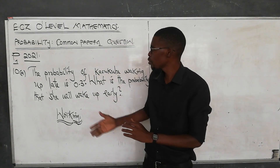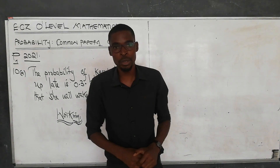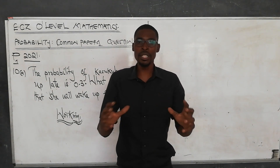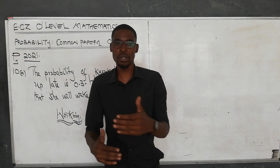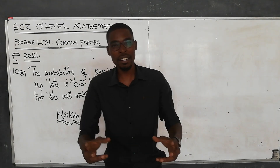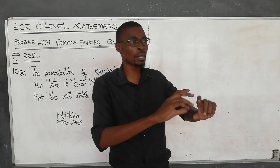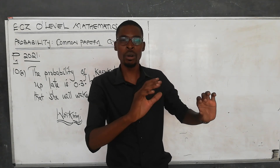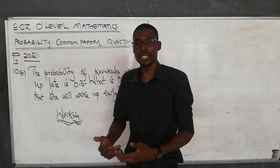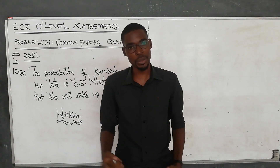Just to explain what this concept is about — we understand the definition of probability to be the likelihood or chance of an event to occur. We also understand that a set of all the possibilities of an event happening is called a sample space. If you add up all the probabilities in a sample space, you are supposed to get 1, because the maximum chance of an event occurring is 1.